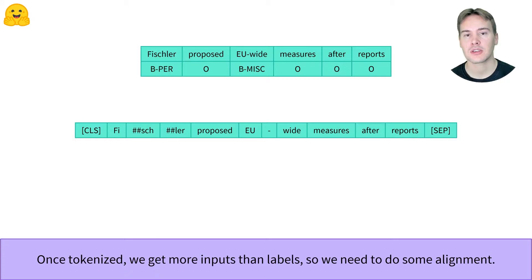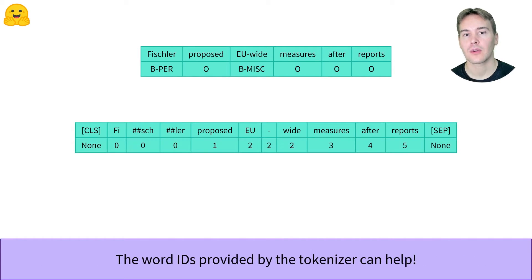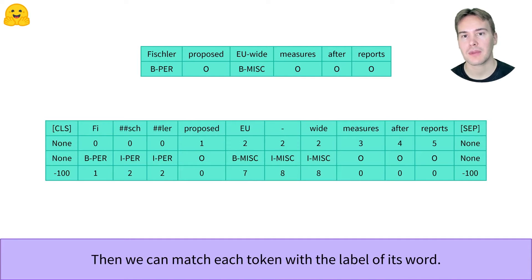Since we have added special tokens and each word may have been split into several tokens, our labels won't match the tokens anymore. This is where the word IDs a fast tokenizer provides come to the rescue. They match each token to the word it belongs to, which allows us to map each token to its label. We just have to make sure we change the B label to their I counterparts for tokens that are inside, but not at the beginning, of the word.